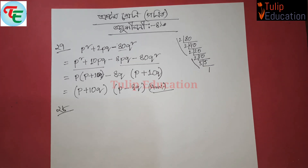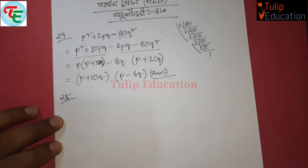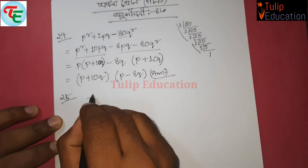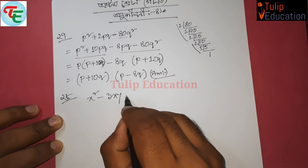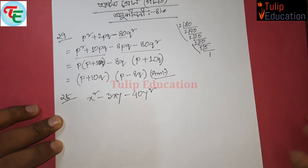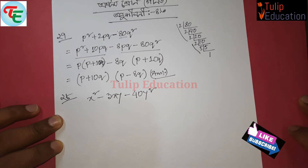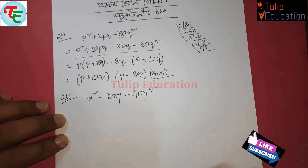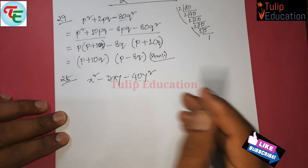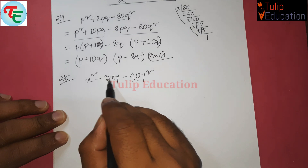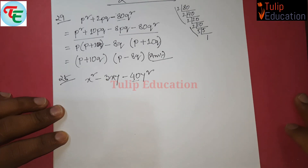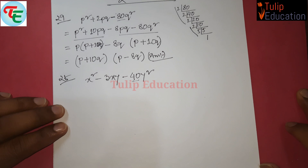Now let's solve problem 88. We have x squared minus 3xy minus 40y squared. We need to break the middle term. Since we are targeting 40, the calculation should give us 3xy. So 40 can be split as 2×20=40, 10×4=40, or 8×5=40.